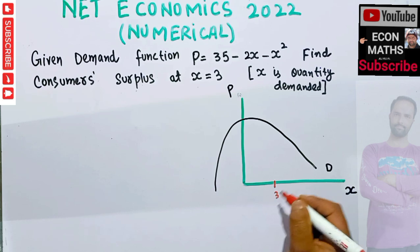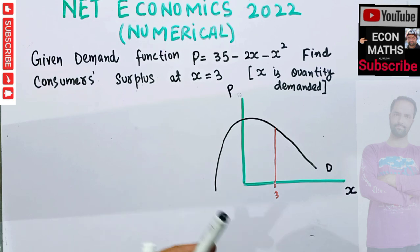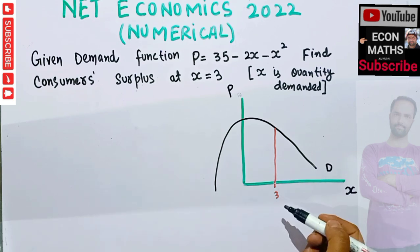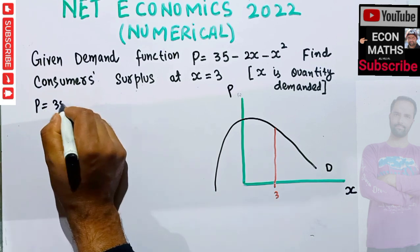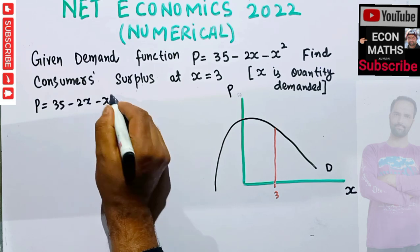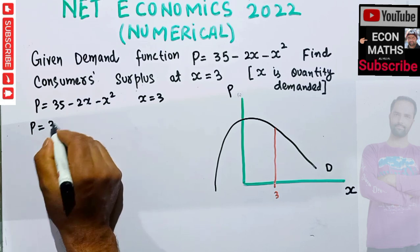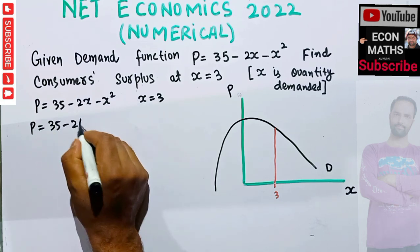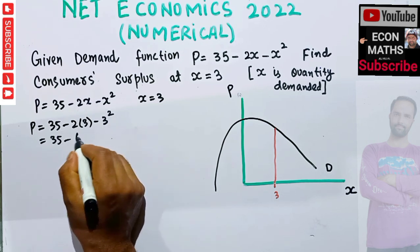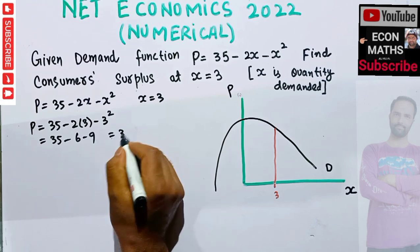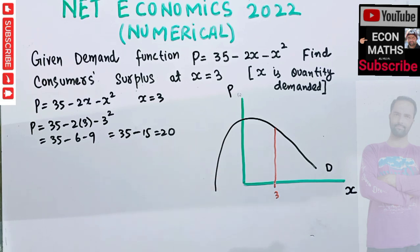We need to find the consumer surplus at x = 3. Since quantity is given, we first need to find the corresponding price. Since p = 35 minus 2x minus x squared and x = 3, the price will be 35 minus 2(3) minus 3 squared, which gives us 35 minus 6 minus 9.